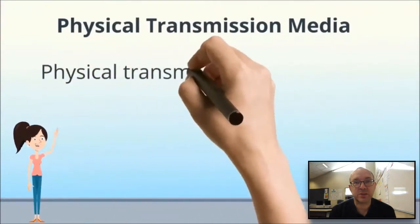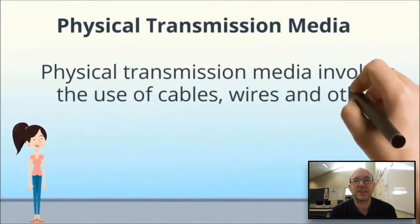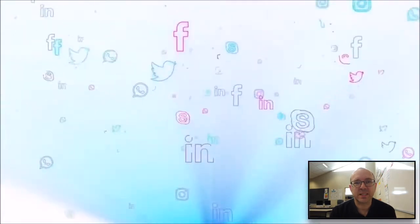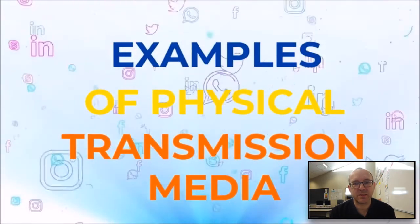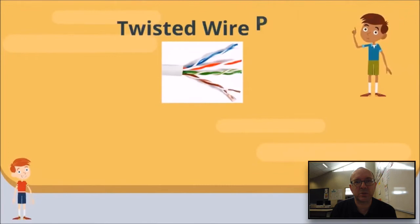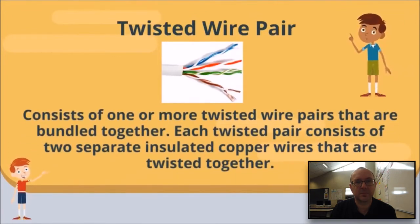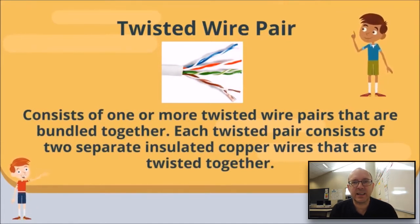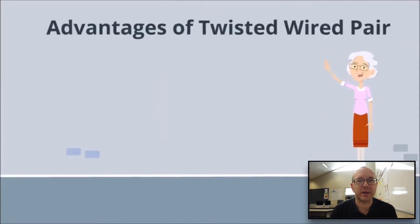There's physical transmission media, which involves the use of cables, wires, and other tangible devices. Let's have a look at some examples. Twisted pair cable — this consists of one or more twisted wire pairs bundled together. Each twisted pair consists of two separate insulated copper wires that are twisted together.